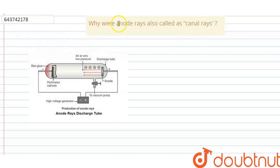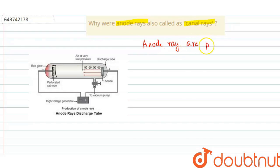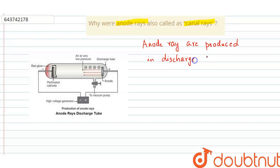The question says: why were anode rays also called canal rays? Anode rays are basically produced in the discharge tube with perforations in the cathode.